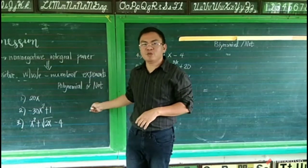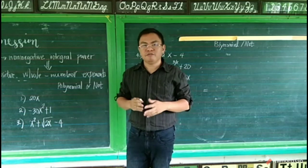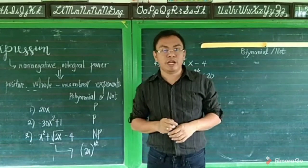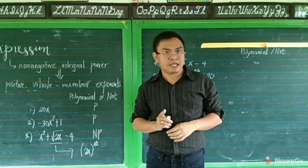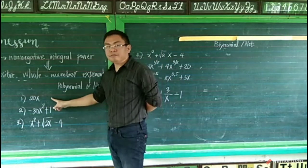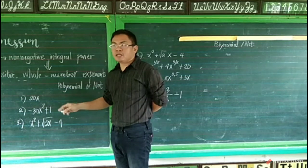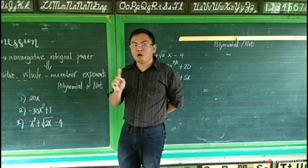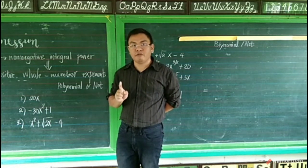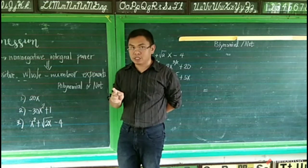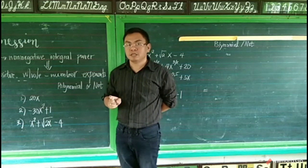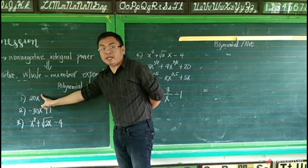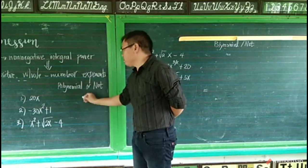Now let's identify which of the following algebraic expressions is a polynomial. Write P if polynomial, and NP if not. Starting with number one: 20X. All we need to do is check the exponent of X. The exponent of X here is positive one. Therefore, number one is a polynomial.